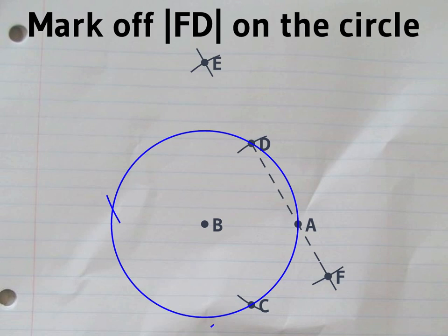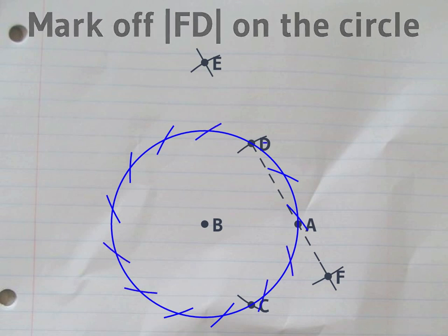If you mark off that distance around the circle, you'll get 13 points on the circle, which are almost exactly the corners of a regular 13-sided polygon.